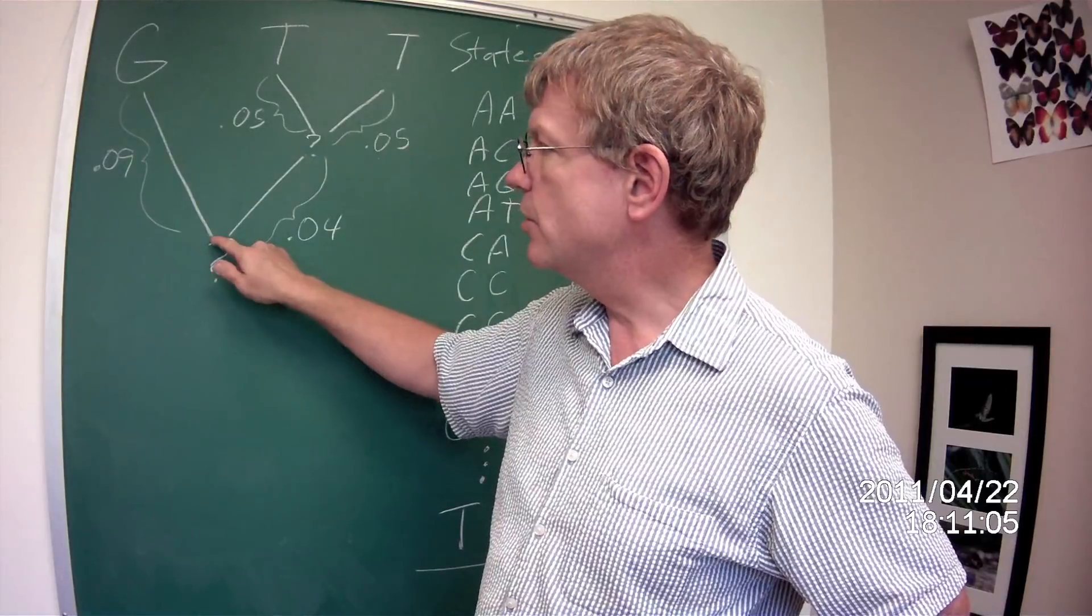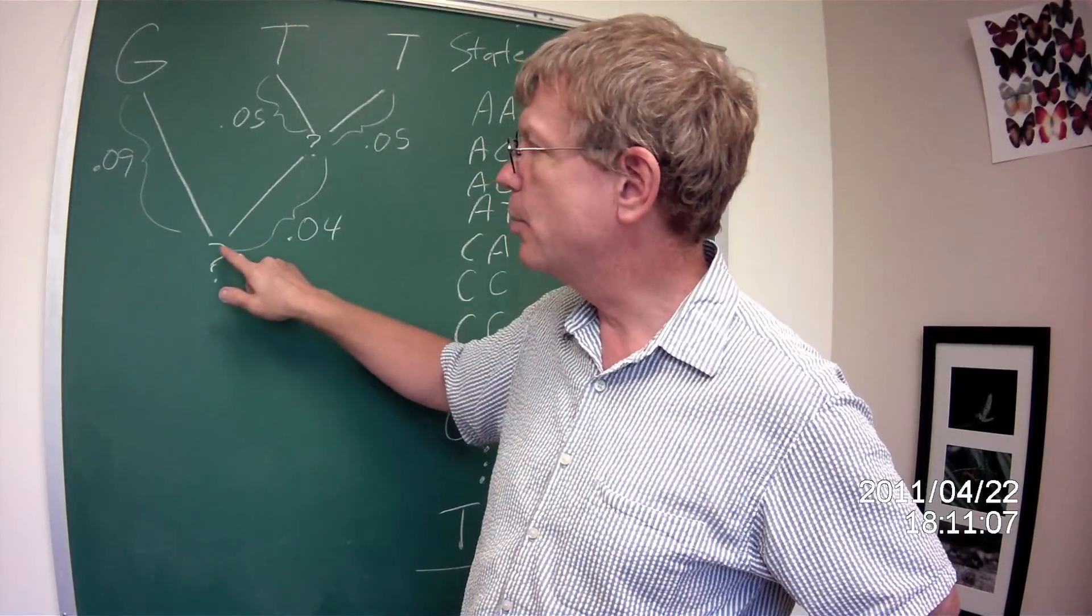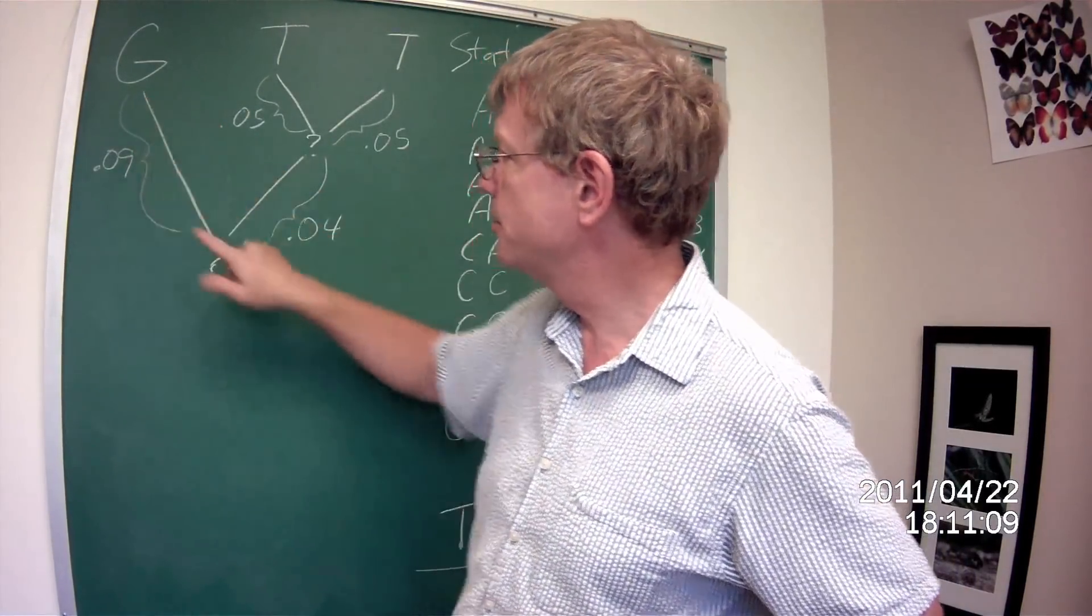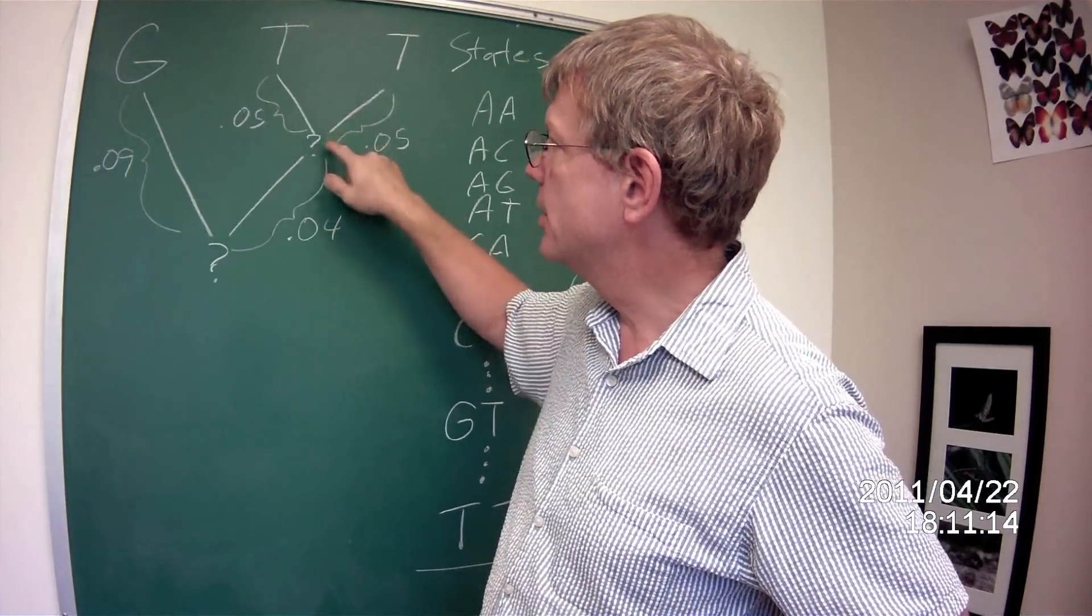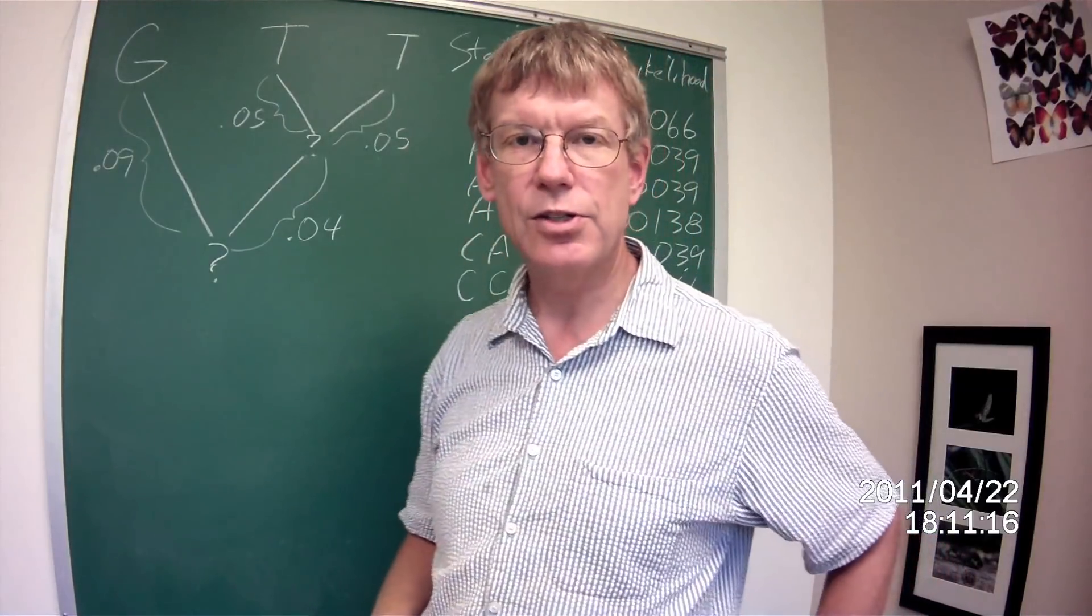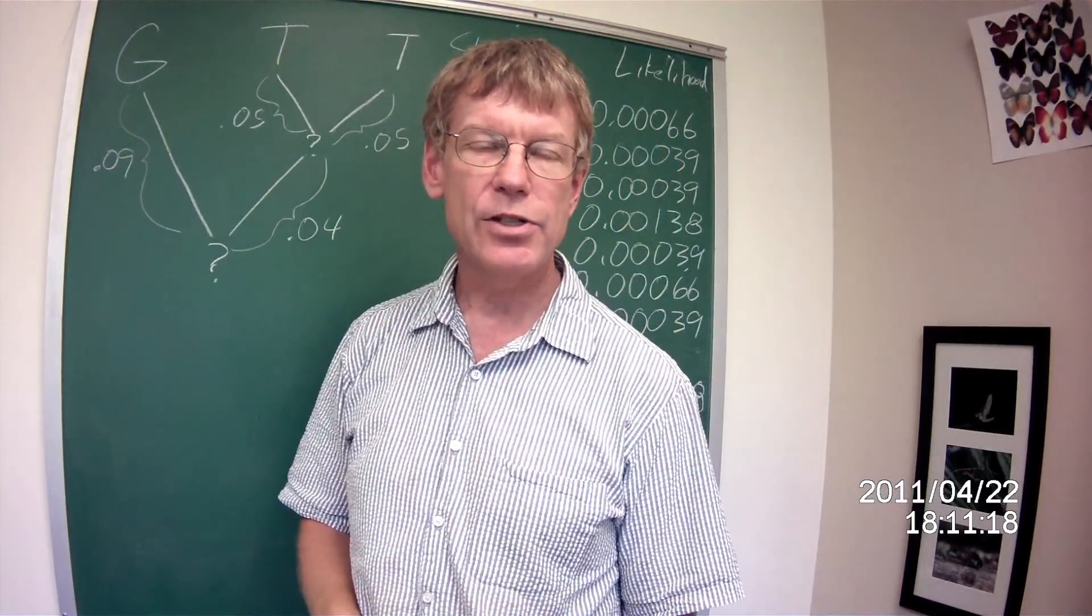And let's imagine a tree with branch lengths of 0.09 from here to here, 0.04 from here to here, and 0.05 from here to here, and here to here. Okay, so we have the data and we have some branch lengths.